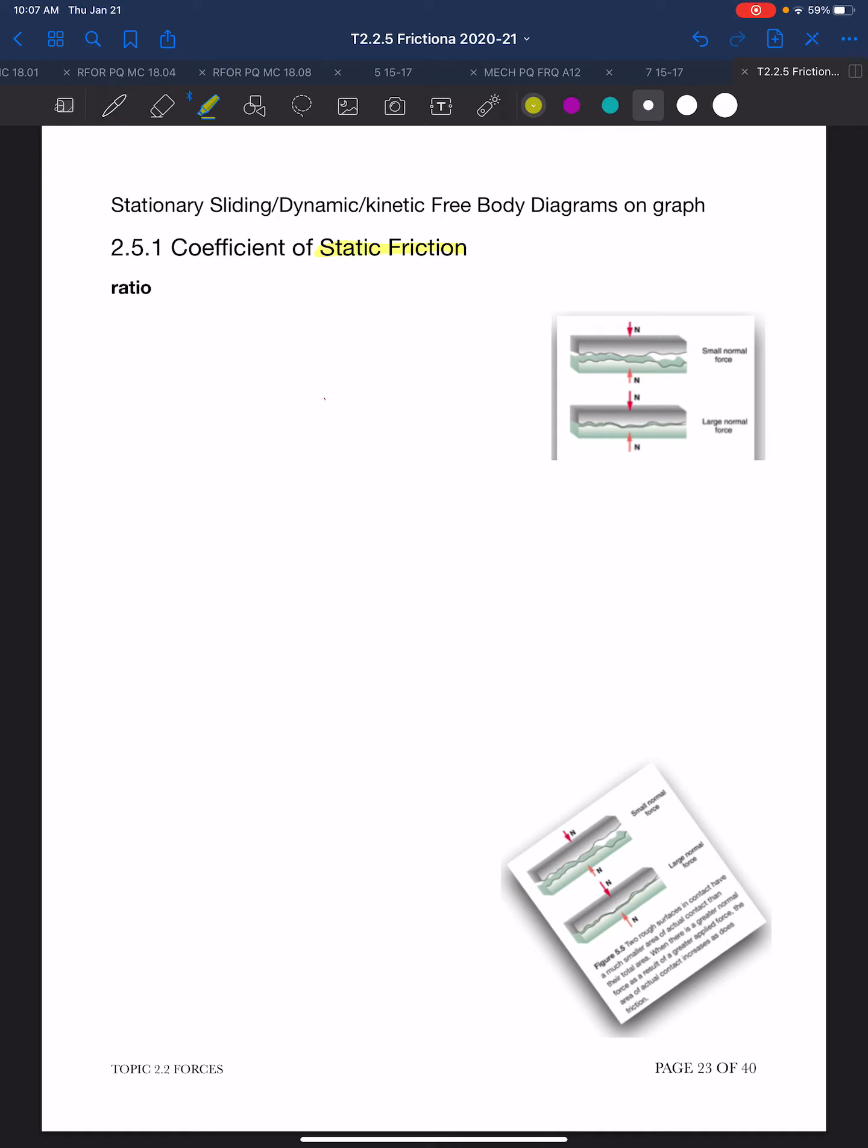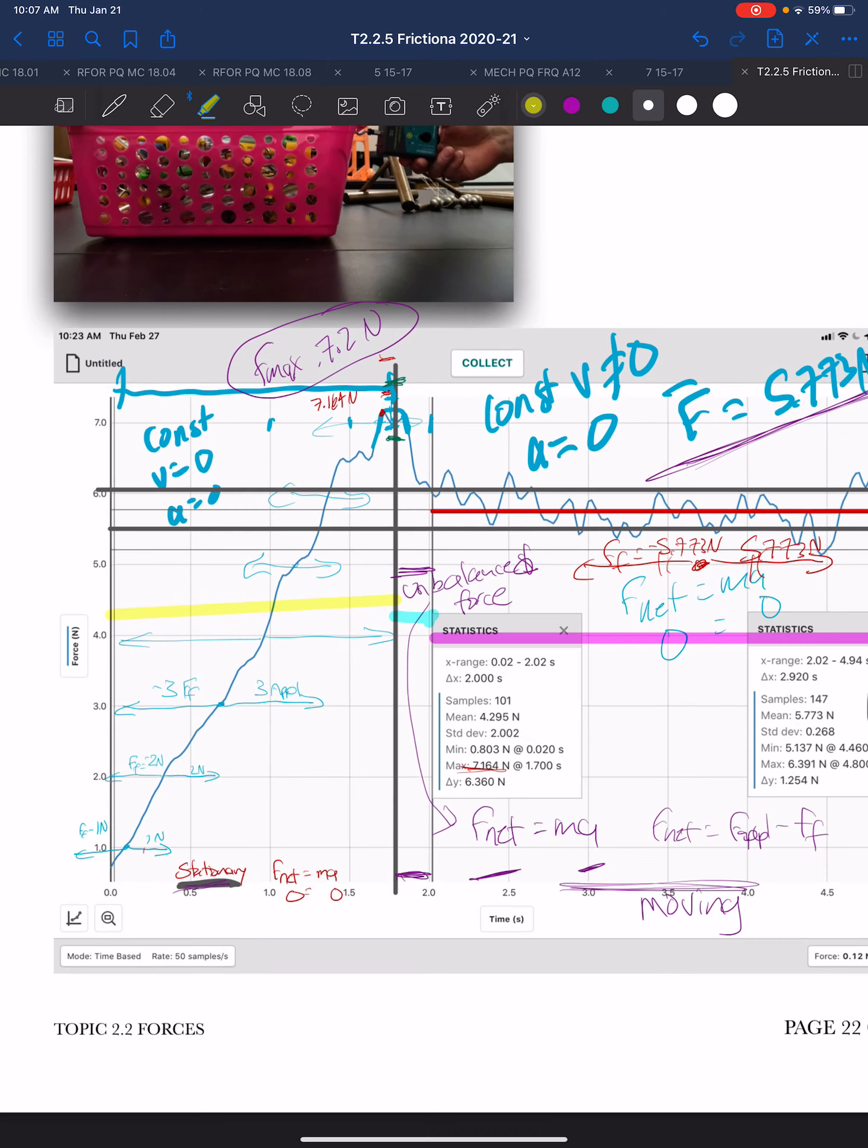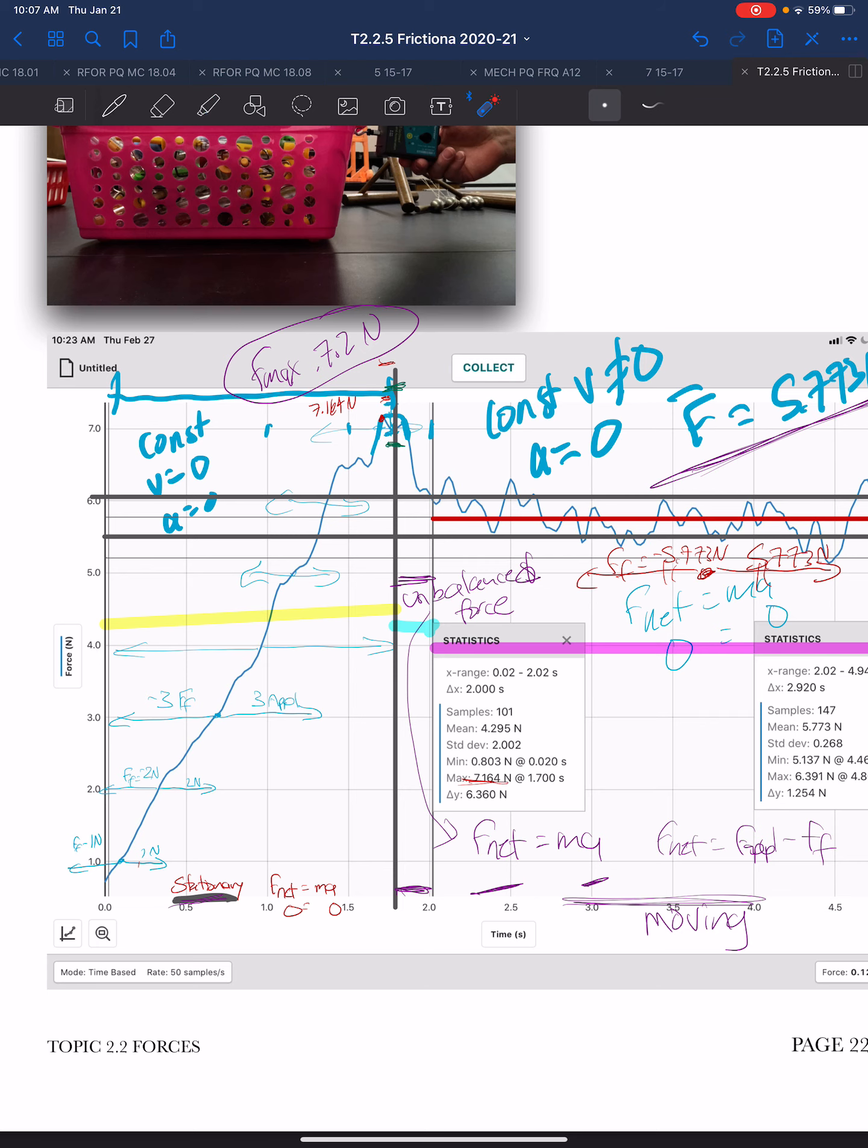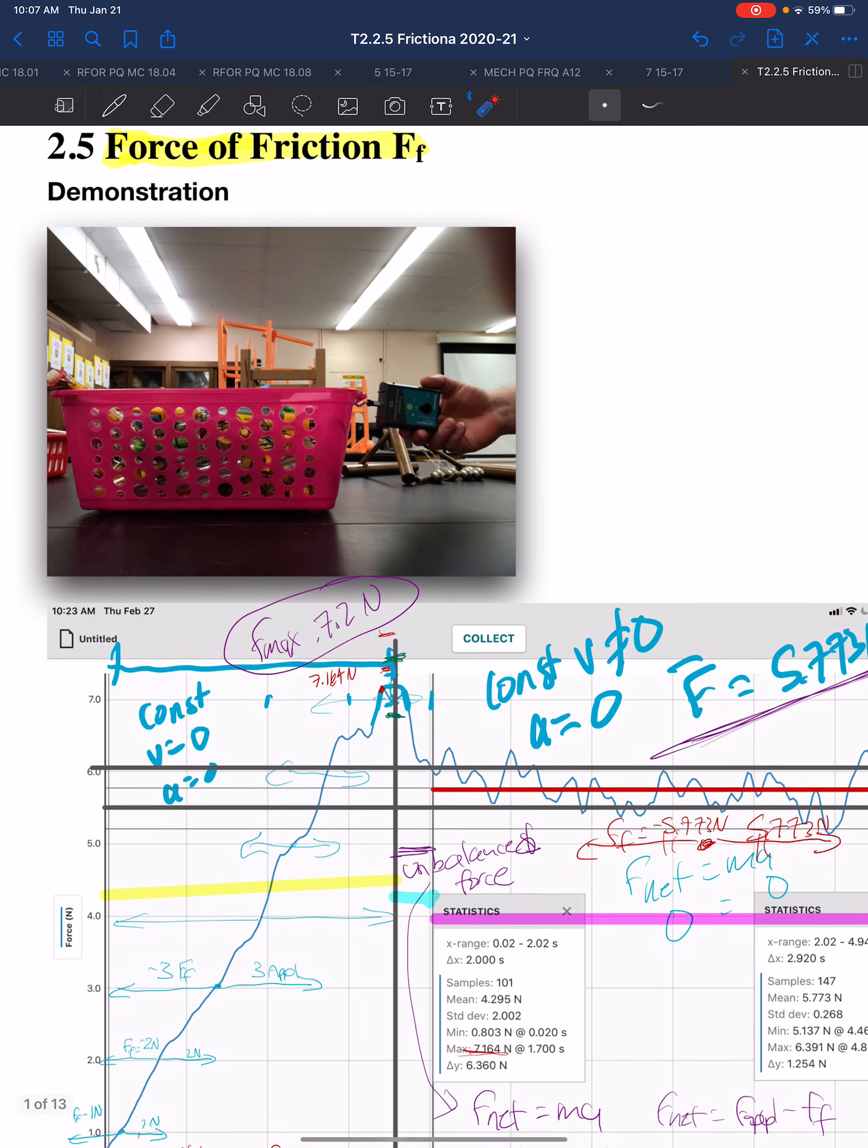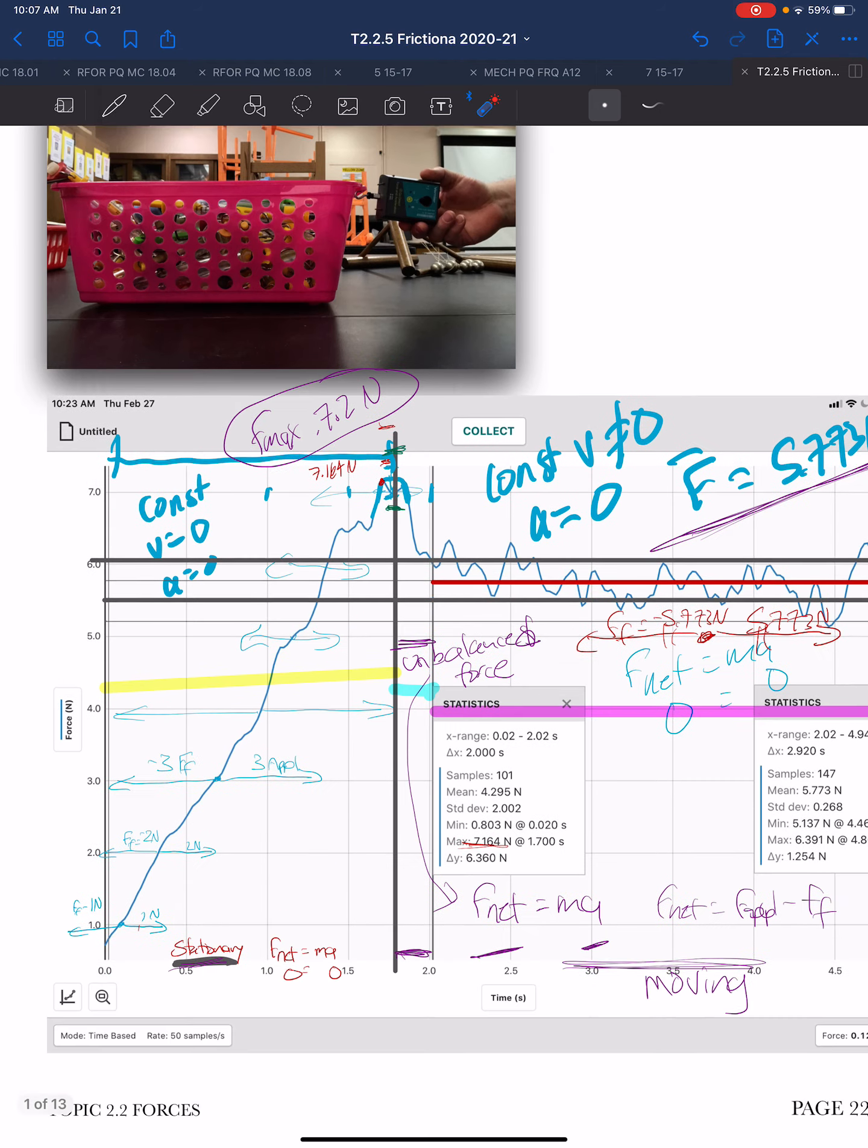Just a review of what we spoke about in our previous demonstration. We had this basket that was at rest, we attached a force probe to it, we gradually increased the force to the point that it broke free and started sliding, and then we continued to drag it, and it slid across the surface at constant velocity.